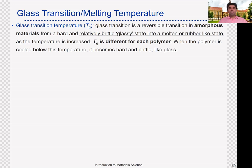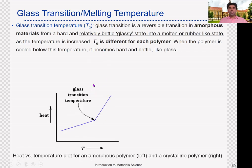The glass transition temperature, defined by Tg, is an important parameter related to amorphous materials. Amorphous materials undergo a reversible transition at a specific temperature — we call that the glass transition temperature. Initially, amorphous materials exhibit glassy behavior; they are relatively hard and brittle. If you look at the curve, the y-axis indicates heat and the x-axis indicates temperature.